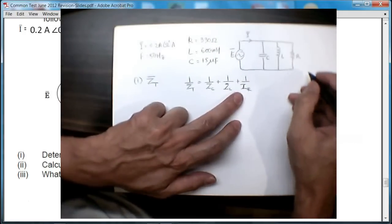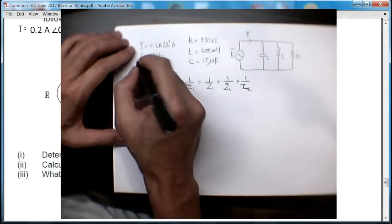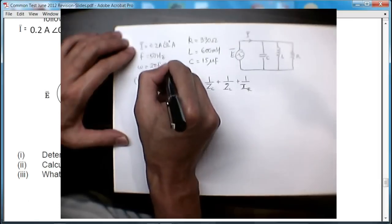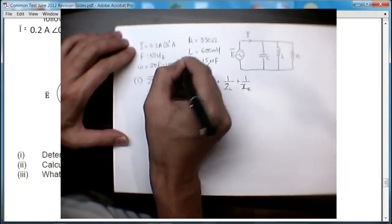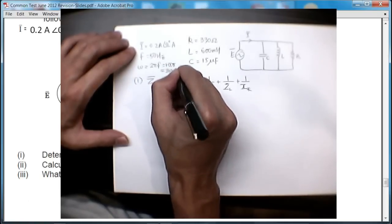Now if the frequency of the supply voltage is 50 Hertz, then we know that the angular velocity omega = 2πf is equal to 100π radians per second or 314.16.